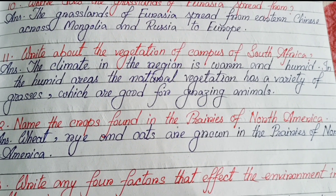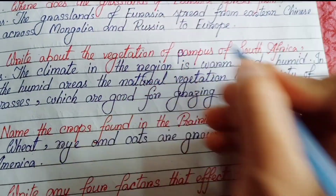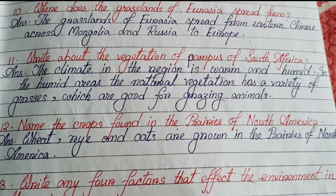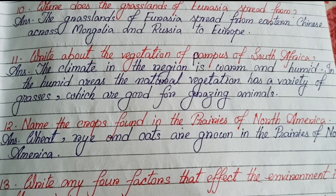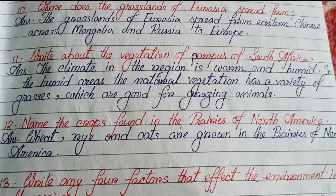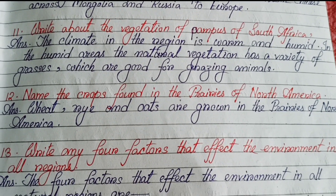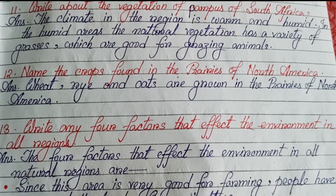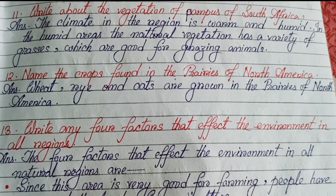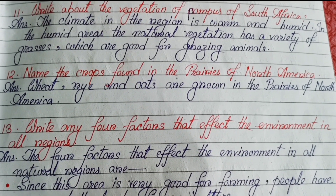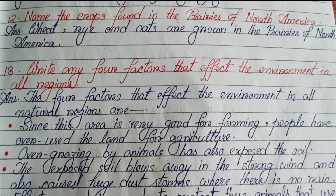What about the vegetation of the Veld of South Africa? The climate in the region is warm and humid; in the humid areas the natural vegetation has a variety of grasses which are good for grazing animals. Name the crops found in the Prairies of North America: wheat, rye, and oats are grown in the Prairies of North America.